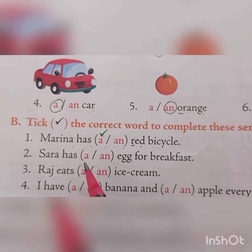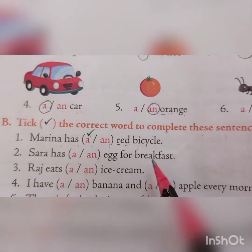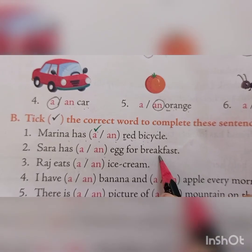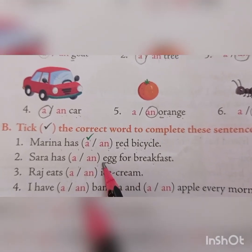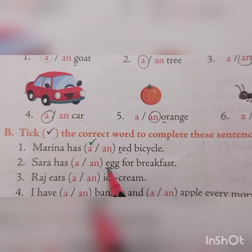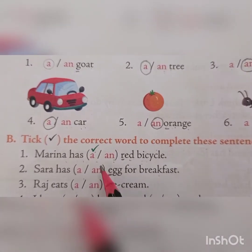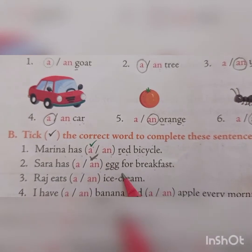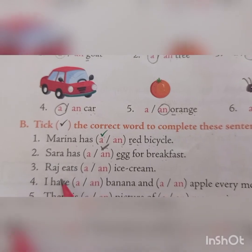Next: Sarah has an egg for breakfast. Egg starts with a vowel sound, so we use 'AN.' An egg for breakfast.